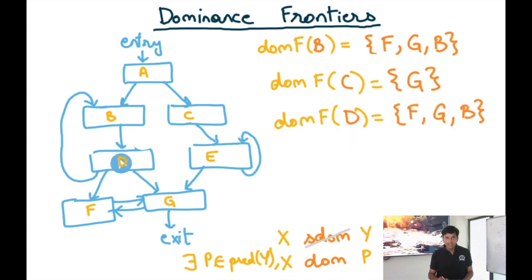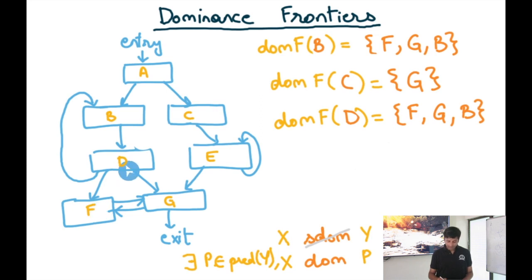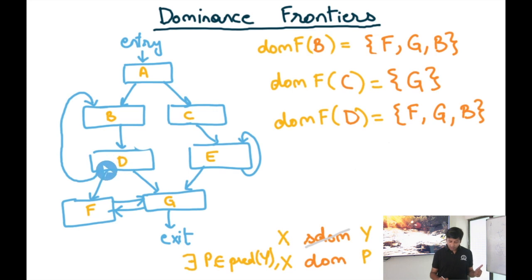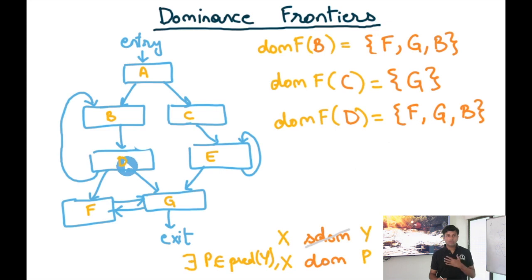Let's look at the dominance frontier of node D. Node D has three outgoing edges: one going to B, one to F, and one to G. Does D strictly dominate F? No. Does D dominate a predecessor of F? Yes — the predecessor of F is D itself, which D dominates, but D does not strictly dominate F. So F is in the dominance frontier of D. Similarly, G is in the dominance frontier of D, and B is also in the dominance frontier of D because D does not strictly dominate B but dominates itself, which is a predecessor of D.